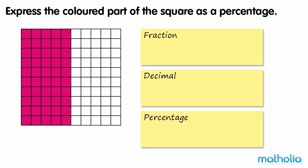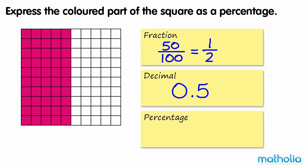Express the coloured part of the square as a percentage. 50 squares are coloured. 50/100ths is equal to 1/2. 50/100ths is 5 tenths, which can be written as the decimal 0.5. One part in 100 equals 1%, so 50 parts in 100 equals 50%.